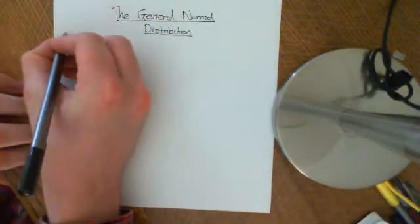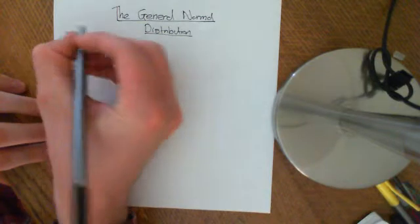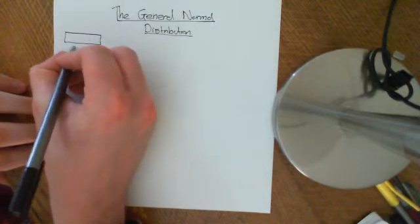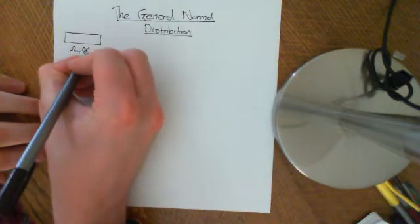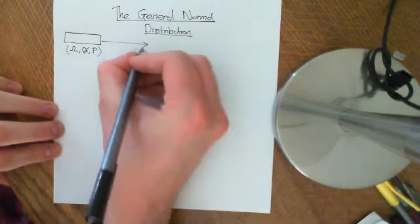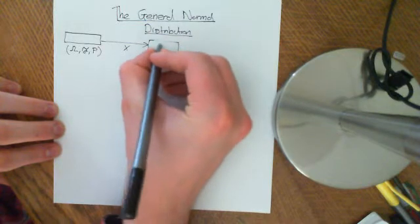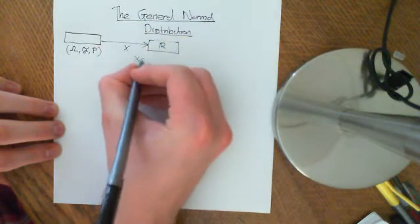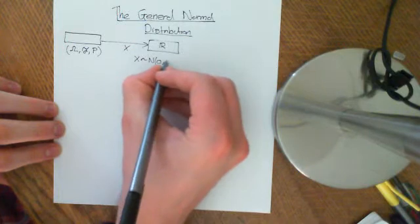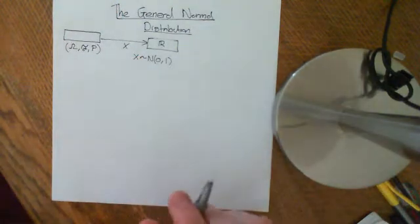Let's imagine that we have some abstract probability space, which we'll call omega, F, and P. And we have a random variable X which is going to map it onto the real line, and it's going to be distributed standard normally, with mean 0 and variance 1.